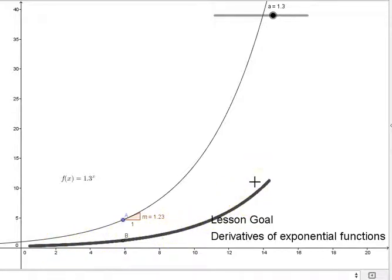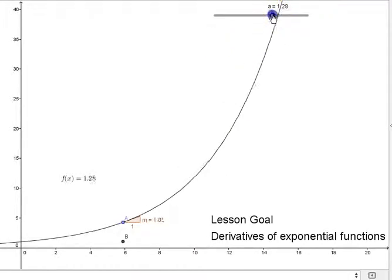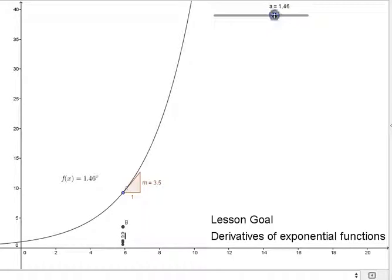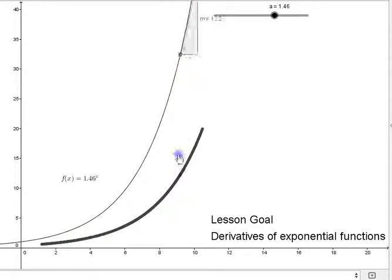Okay let's take a look at another one. I might just increase my curve a little bit. Okay so this time I've got 1.46 to the power of x. Again we see an exponential function. So you should be getting the idea that the derivative of an exponential function is an exponential function.